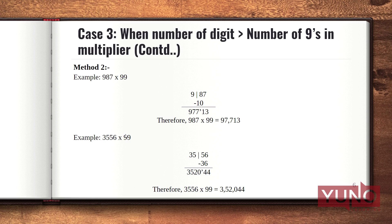Let's see one more example to make it clearer: 3,556 multiplied with 99. There are two 9s in the multiplier, so I divide the number into two parts — left-hand side and right-hand side. After adding 1 to the LHS it becomes 36, and subtracting 36 from the whole multiplicand gives 3,520. The last step is to apply 'all from 9 last from 10' on the RHS, which gives 44. So the answer is 352,044.